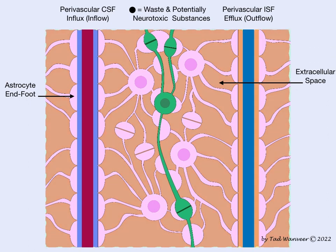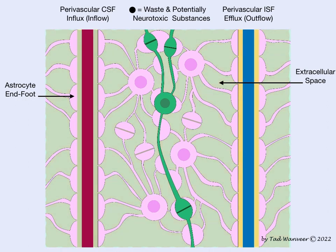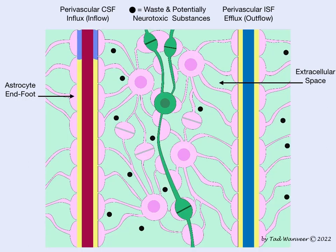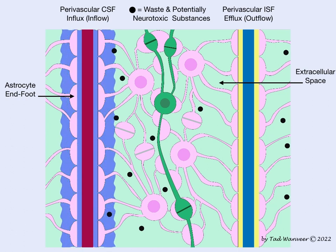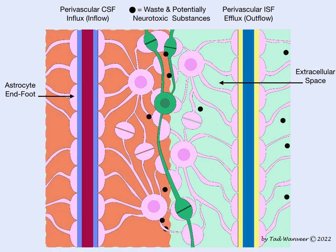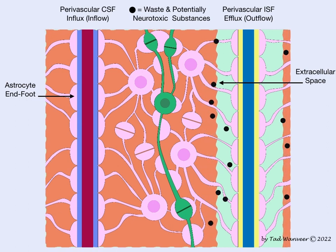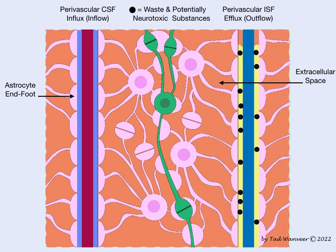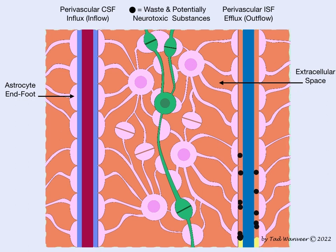A disturbance in the glymphatic system can lead to a lessening of nutrient flow to brain cells, as well as a buildup of waste and neurotoxic substances, which over time can lead to neuropathology. This has been a brief overview of the glymphatic system and cerebral spinal fluid flow. Thank you for joining me.